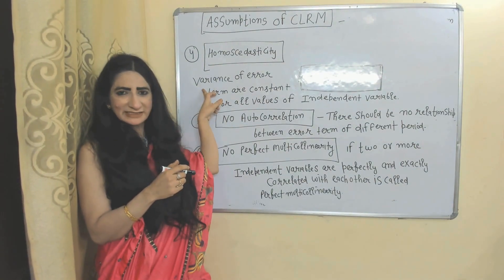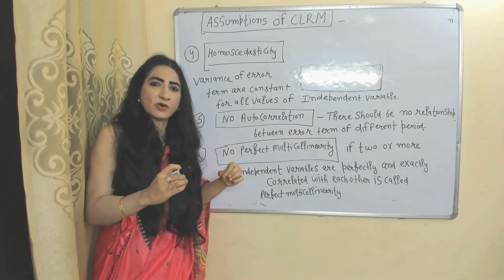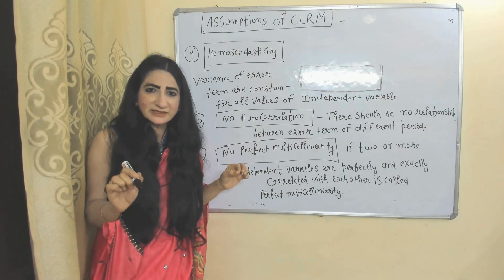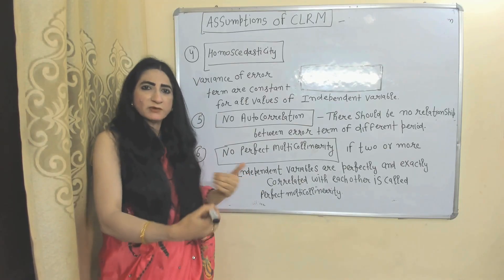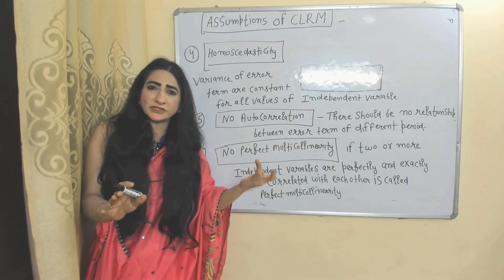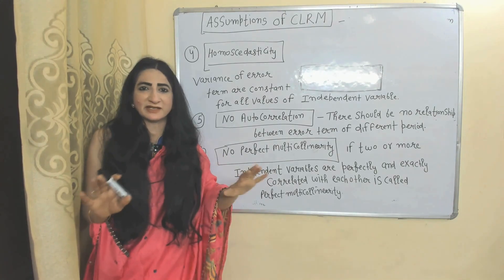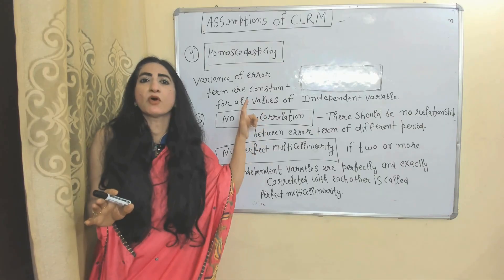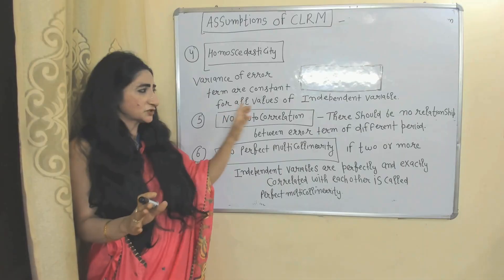Fourth assumption: homoscedasticity, meaning the variance of error terms is constant for all values of the independent variable. The opposite is heteroscedasticity, where variances of error terms are not constant. The classical linear regression model assumes homoscedasticity.